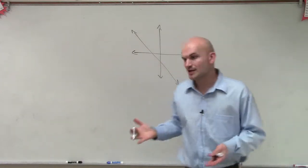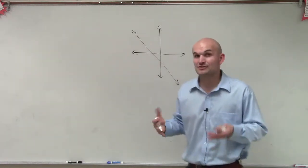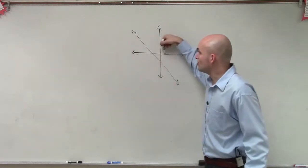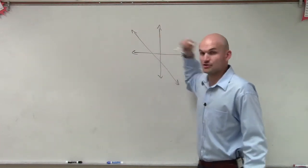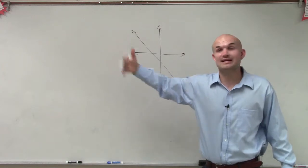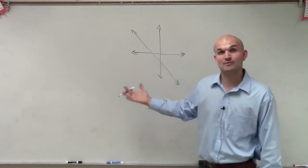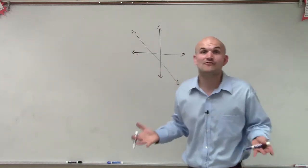So what we can say is when we look at our domain and range, there's no restrictions, right? Our domain for this equation or function is going to be negative infinity to infinity, as well as our maximum and our minimum for our range is going to be negative infinity to infinity.